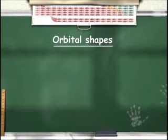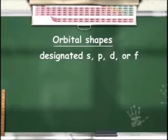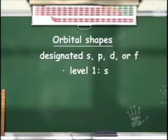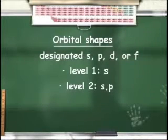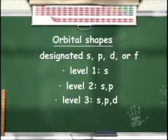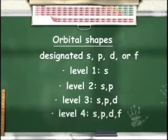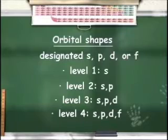The orbital shapes are named S, P, D, and F. S is the lowest energy orbital shape within a main energy level, and F is the highest. Not all main energy levels have all orbital shapes: energy level 1 has only S; energy level 2 has S and P; energy level 3 has S, P, and D; energy level 4 has S, P, D, and F. Each successive level has one more orbital shape than the one before it.